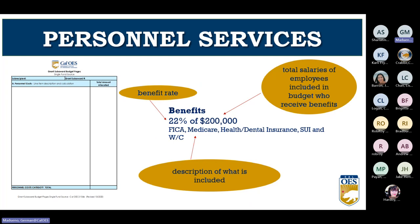For benefit calculations, include the benefit rate — in this example it is 22% — multiplied by the total salaries of employees in the budget who receive benefits — in this example $200,000. Include a brief description of what benefits are included, such as FICA, Medicare, health, and dental.